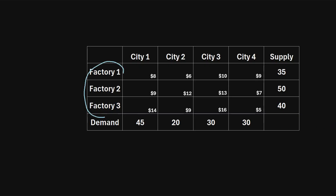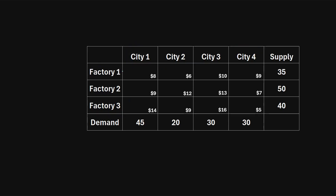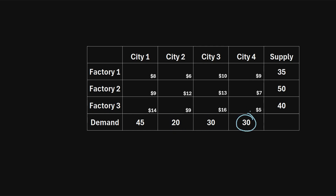We have three factories that produce some good and four cities that have a demand for that good. Factory one has a total supply of 35 units, factory two makes 50 units, and factory three makes 40 units. City one has a total demand of 45 units, city two has 20 units, city three has 30 units, and city four has 30 units.